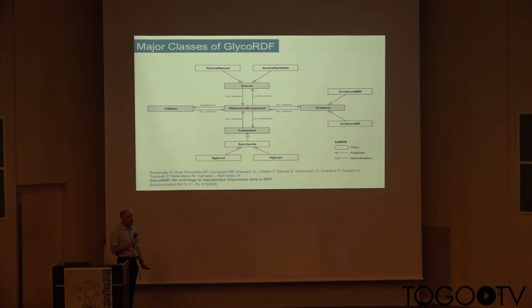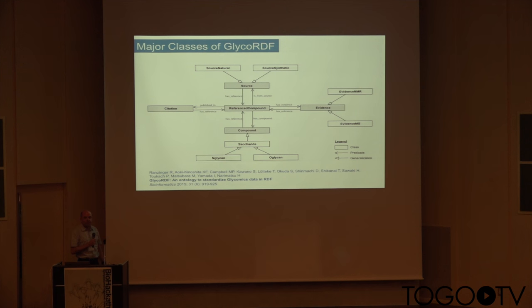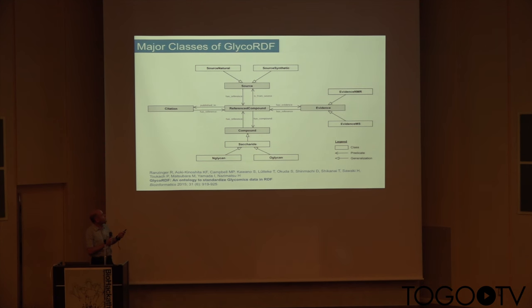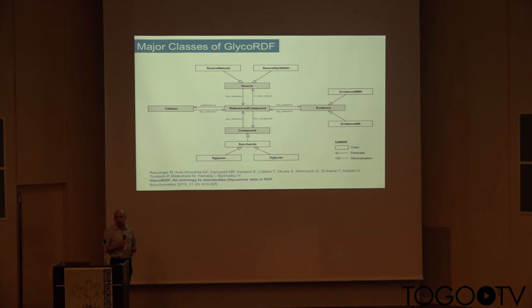Why did we do it this way? In most databases, links exist directly between the glycan and the citation, glycan and taxonomy, and so on. But the advantage of this approach is that you can store information such as: this compound was found in a sample of that species, proved by that experiment, and you can read about it in that publication — all these data together in one place.